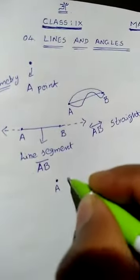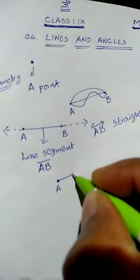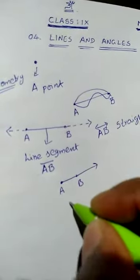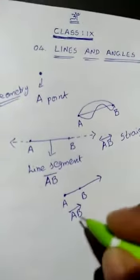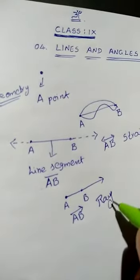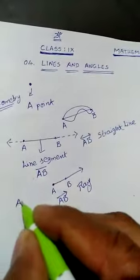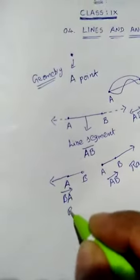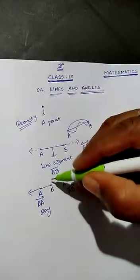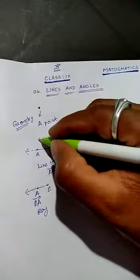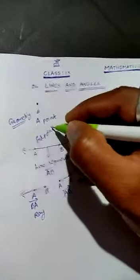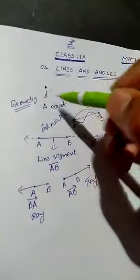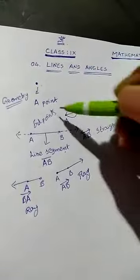When we take point A and point B and extend only in one direction, that is a ray. A ray can be extended in only one direction. One will be the end point. Here A and B are called end points. So the terminologies we have learned are: point, line segment, ray, straight line, and end points.